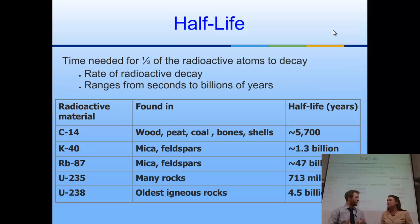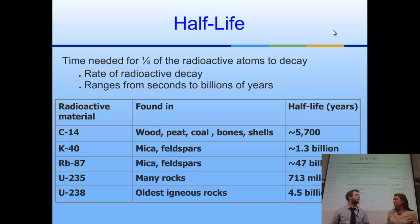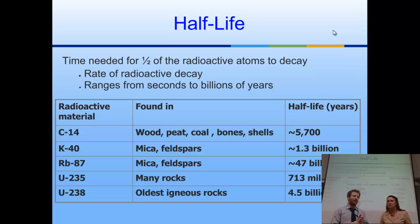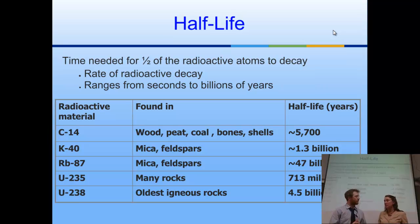A big term we use is the half-life — this is what helps us figure out the absolute age of the rock. The half-life is the amount of time it takes the original number of parent atoms to radioactively decay into the daughter. Half of the original atoms break down into daughters in one half-life. Some common isotopes we use: carbon-14 has a relatively short half-life of only 5,700 years. When geologists are trying to absolute-date something, they choose isotopes based on how old they think that material is. If they think it's billions of years old, they'll probably use isotopes of uranium. If they think it's young, they might use carbon-14, potassium-argon, or strontium-rubidium.